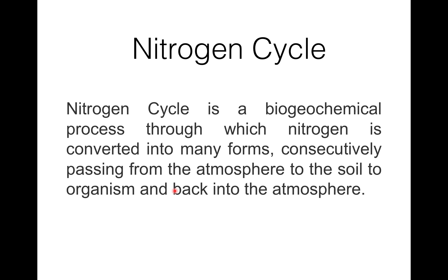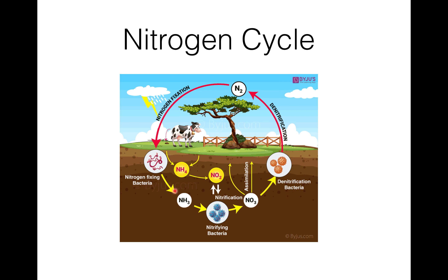Today I explained what the nitrogen cycle is — a biochemical process through which nitrogen is converted into many forms, consequently passing from the atmosphere to the soil, to organisms, and then back into the atmosphere. The nitrogen cycle involves five processes: first, nitrogen fixation; second, nitrification; third, assimilation; fourth, ammonification; and fifth, denitrification.